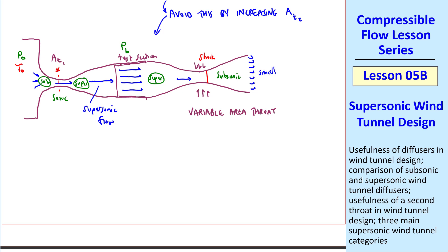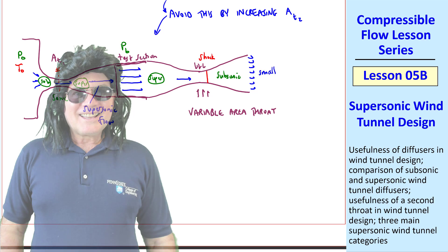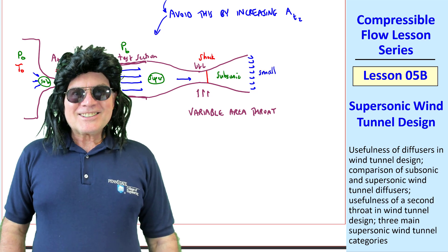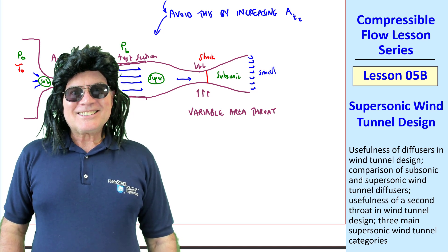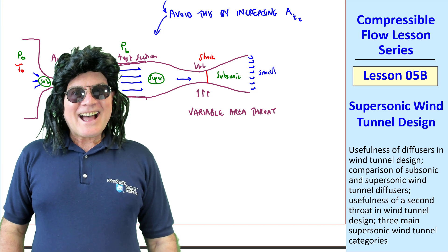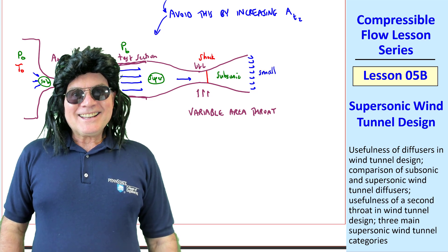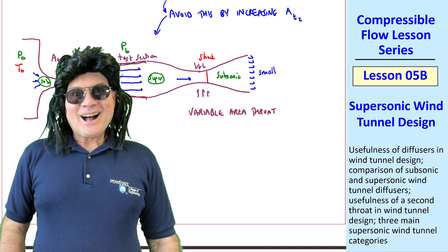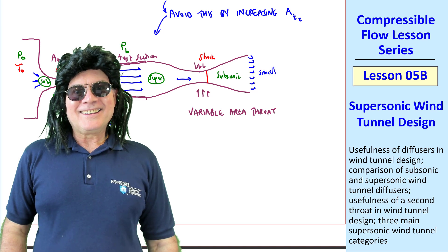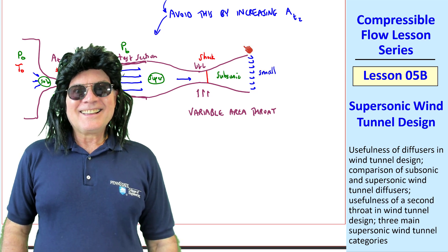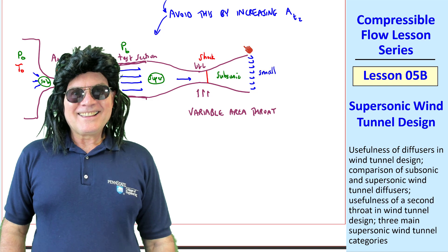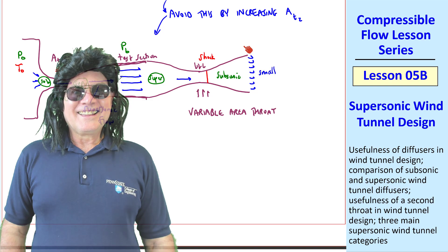In actual application, this situation with one shock is the best you're going to be able to do — but you can get this shock to move very close to the throat and therefore have really small losses across it. When the shock moves upstream we say it was swallowed, and when it moves the other way, engineers typically use the word 'regurgitated.'